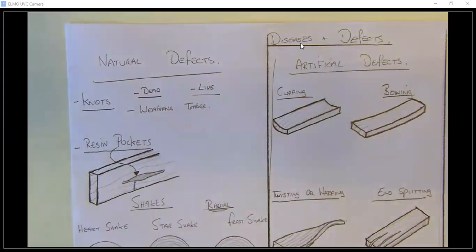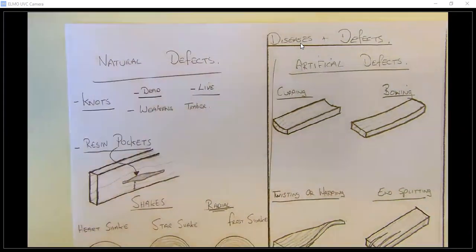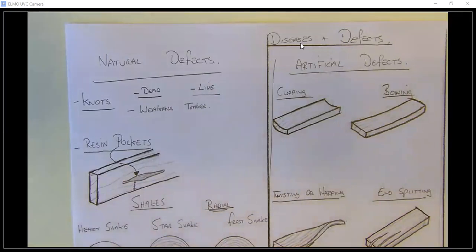Where do knots come from? Knots form when the branches of a tree are cut off or when they fall off. If you have the trunk of a tree and cut it lengthways into planks, that knot from the branch goes deeper into the tree — that's where it's cut off.